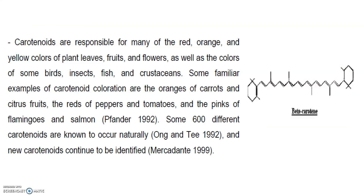Carotenoids are responsible for many of the red, orange, and yellow colors of plant leaves, fruits, and flowers, as well as the colors of some birds, insects, fish, and crustaceans. Some familiar examples of carotenoid colorations are the oranges of carrots and citrus fruit, the reds of peppers and tomatoes, and the pinks of flamingos and salmon. Some 600 different carotenoids are known to occur naturally. You can see the beta-carotene structure here — this compound contains only carbon and hydrogen.